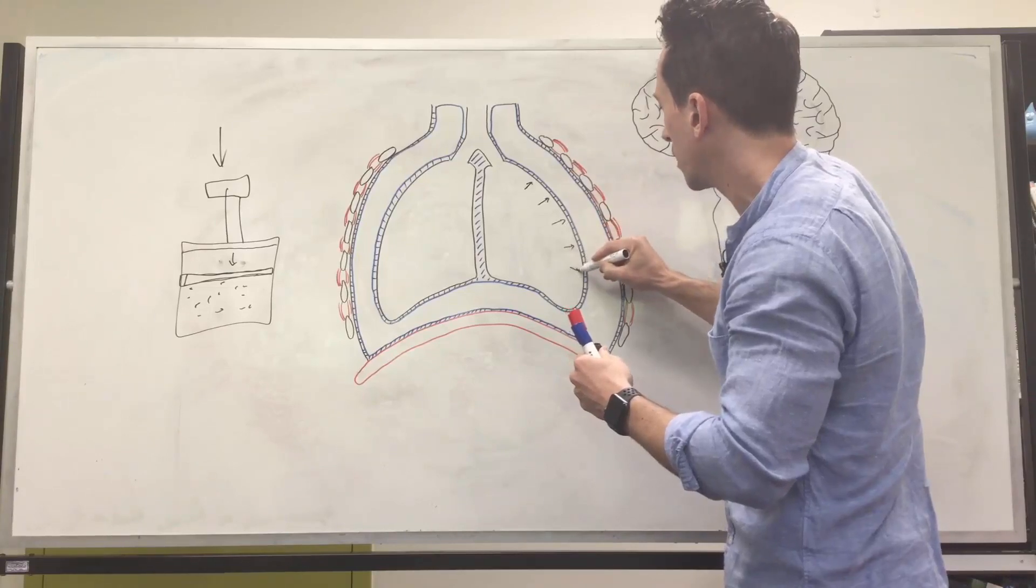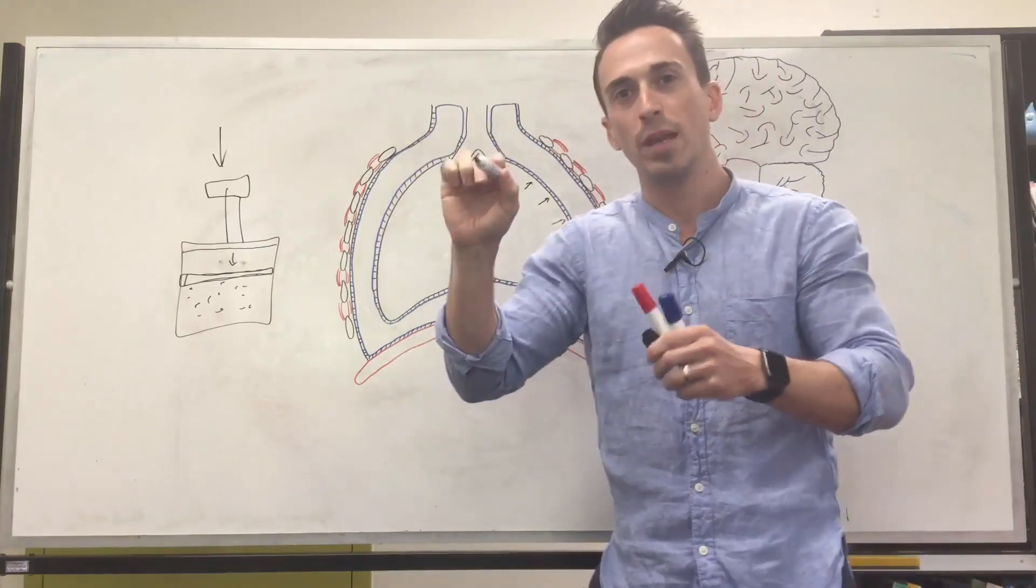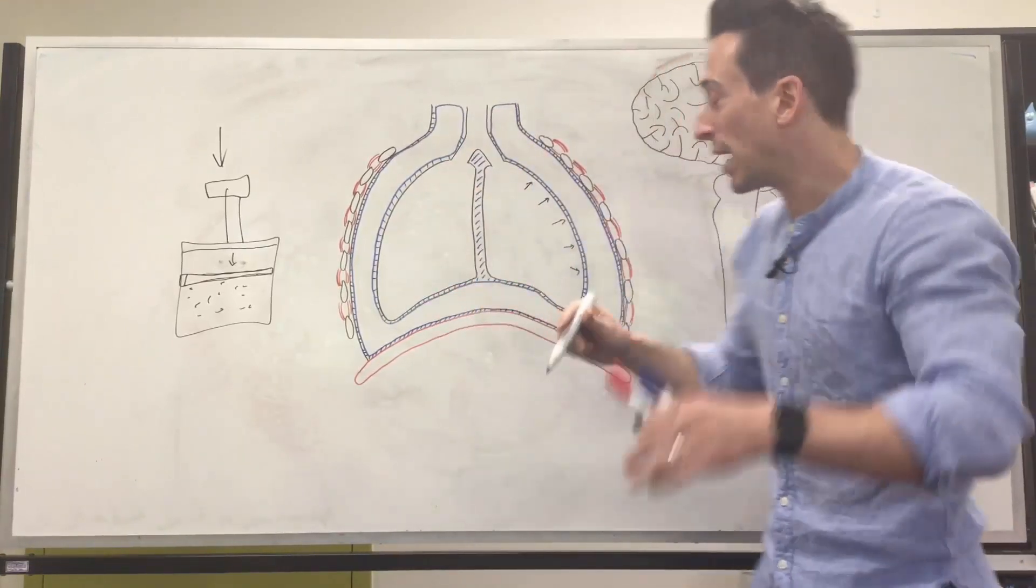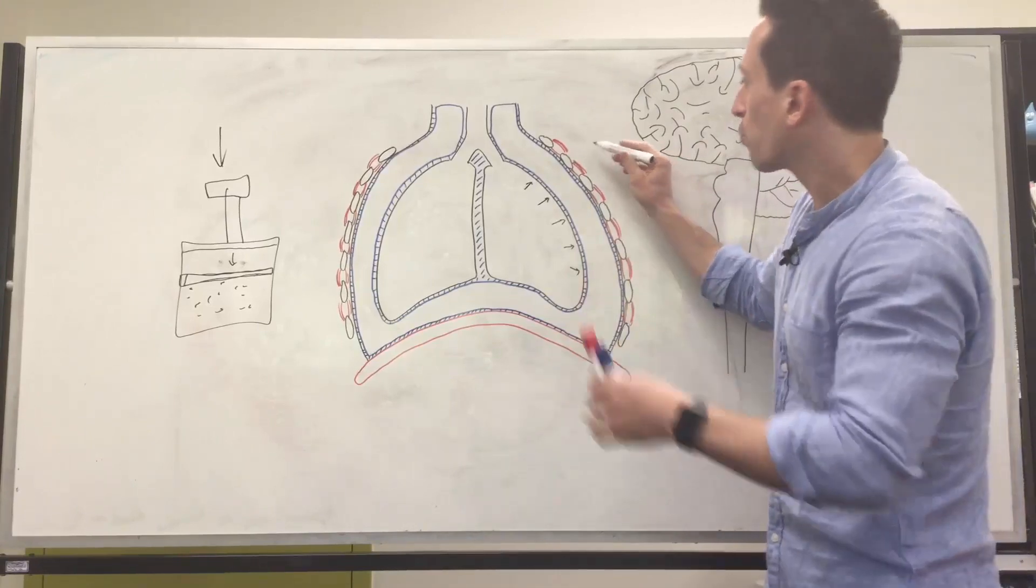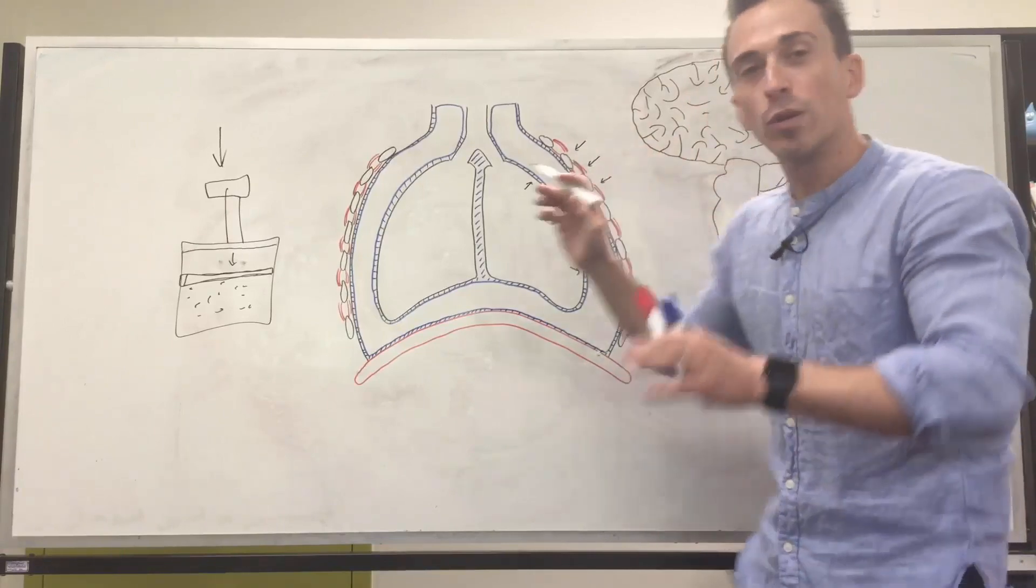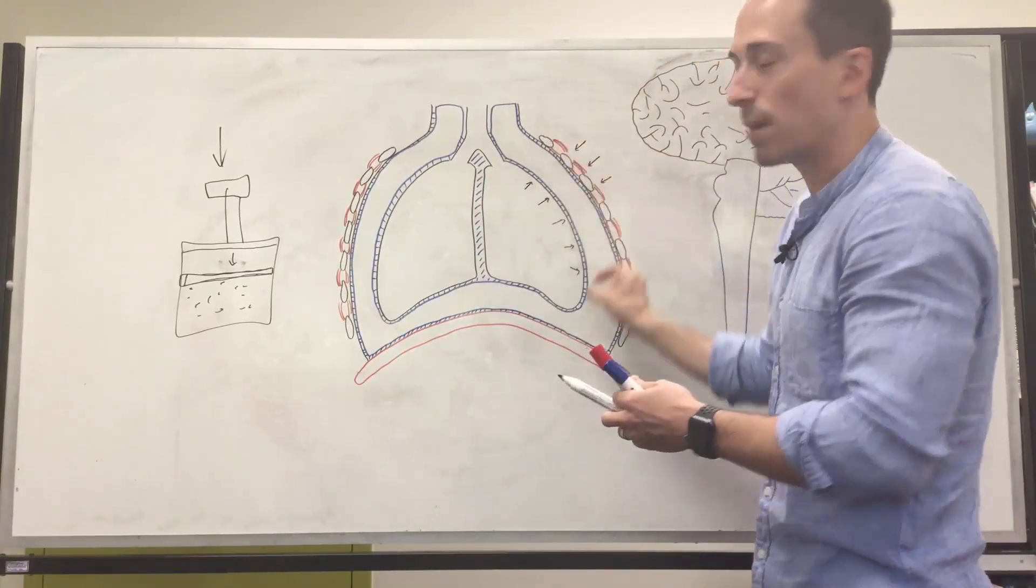So the lungs are stuck to the visceral pleural membrane. But because the pleural cavity is also a lower pressure compared to the outside environment, the rib cage or the wall of the thorax is also stuck to the parietal pleura, which means now that both the wall of the rib cage and the lungs are stuck to this membrane.